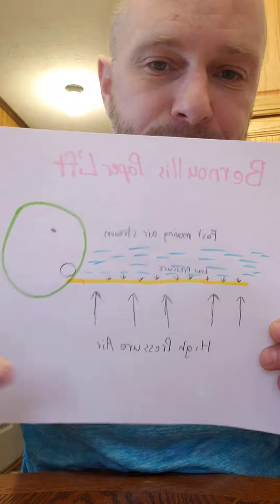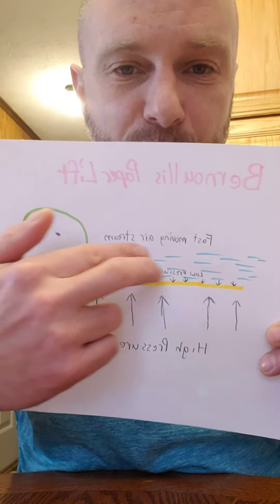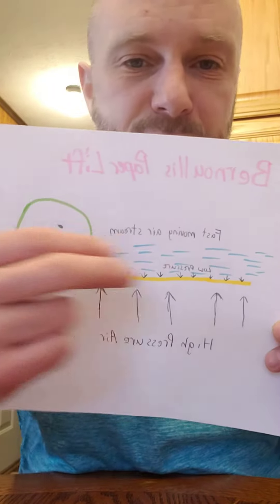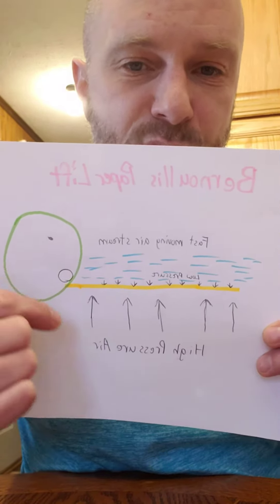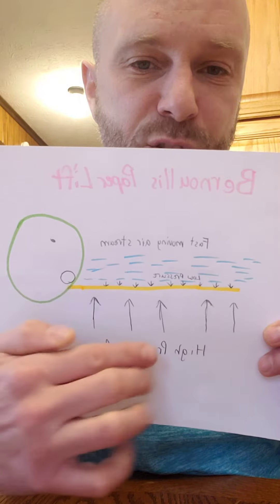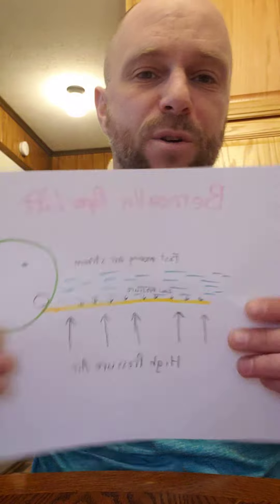So here's me, here's the piece of paper raising up, these blue lines represent the air I'm blowing across, which causes low pressure — that's what these little tiny arrows are — and then the higher pressure is greater than the lower pressure, which causes the paper to raise up. So hopefully this explains Bernoulli's Principle using the paper lift. Thank you for your time.